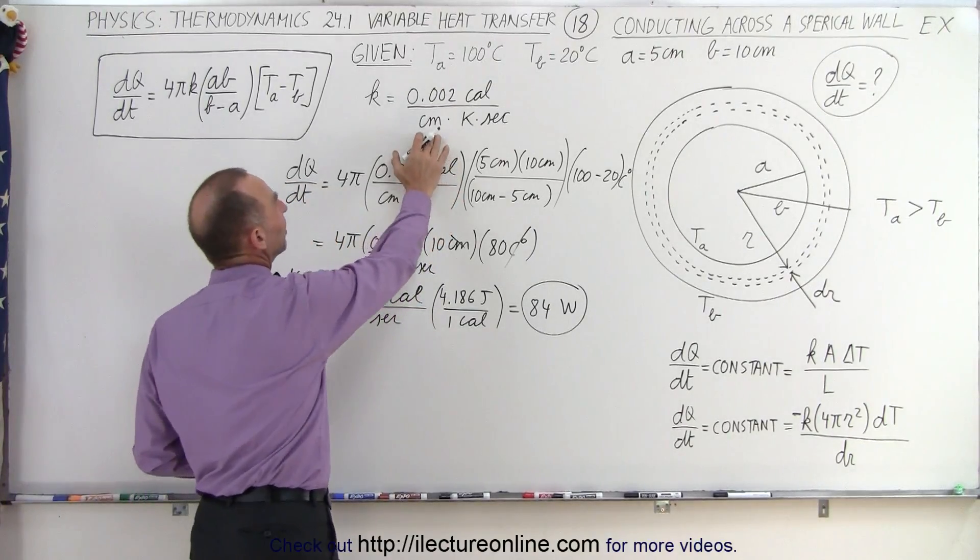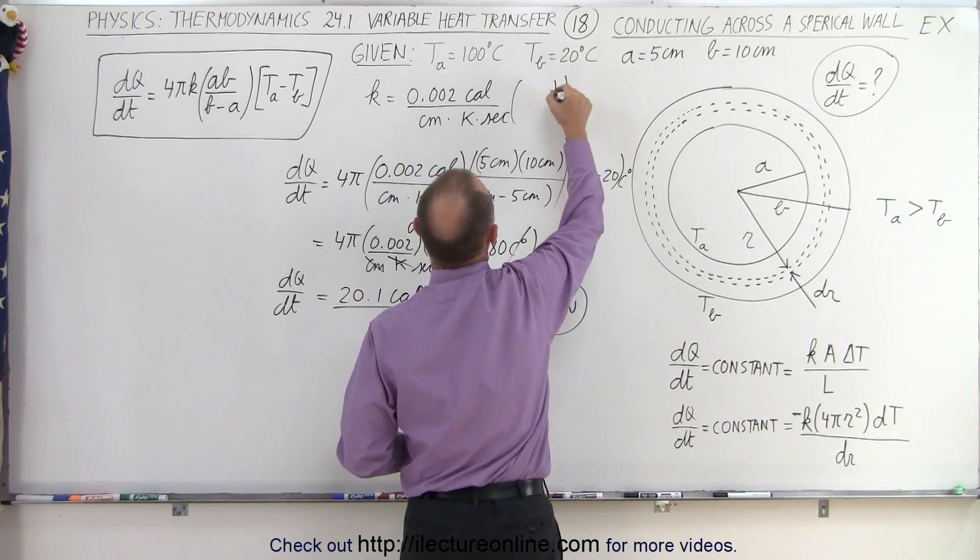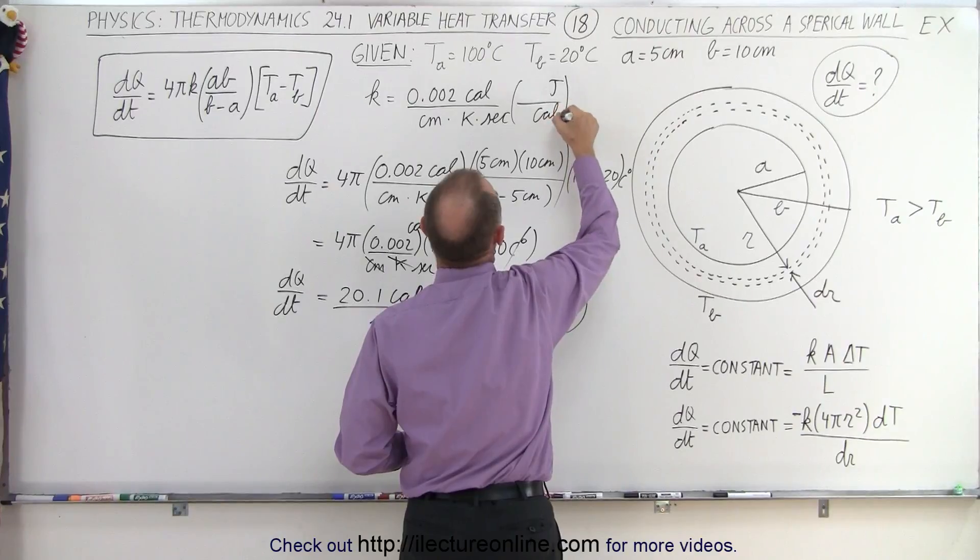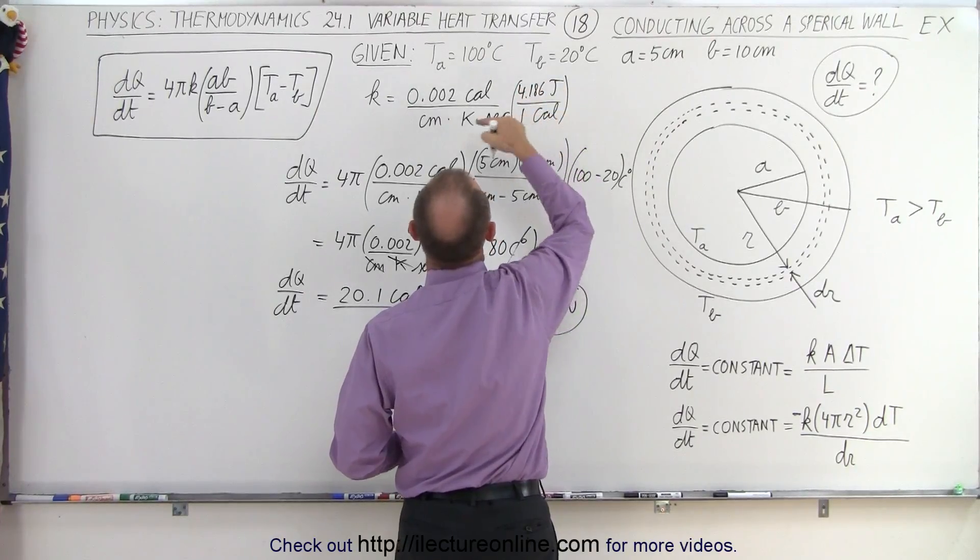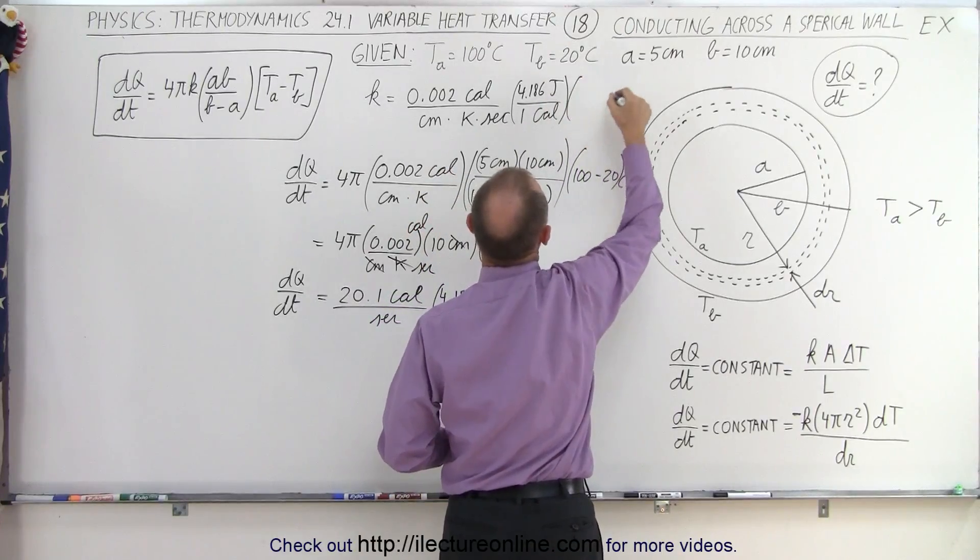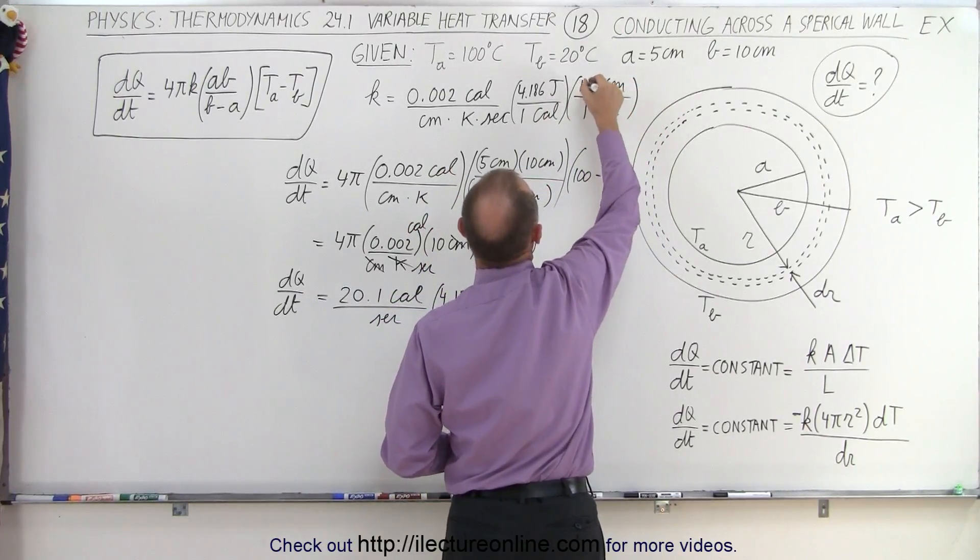Now if you don't like to use this k, we can convert this into joules. So we have a joule and a calorie. So one calorie is 4.186 joules. And then we convert from centimeters to meters. So we have meters and centimeters here. And one meter is 100 centimeters.